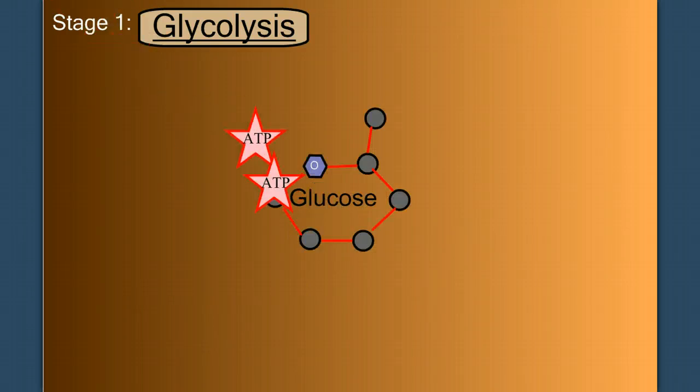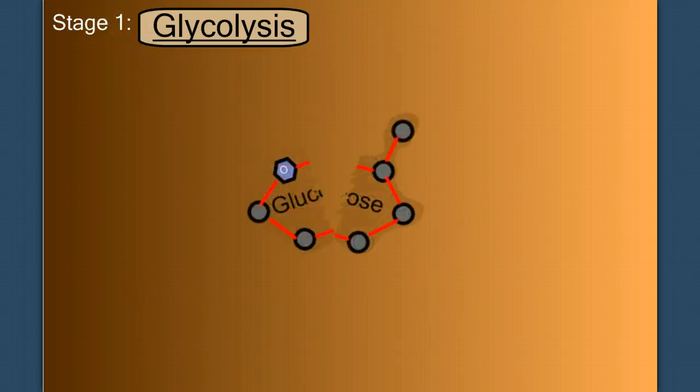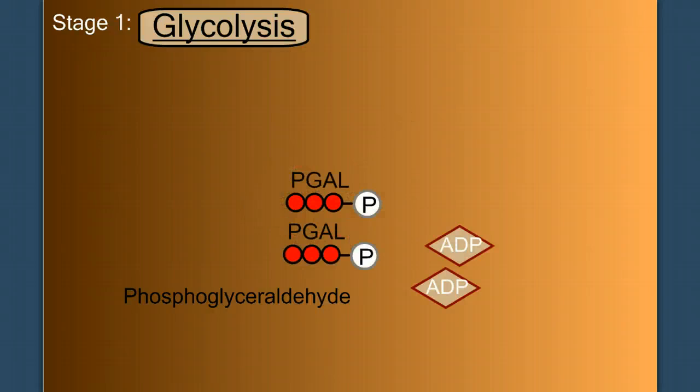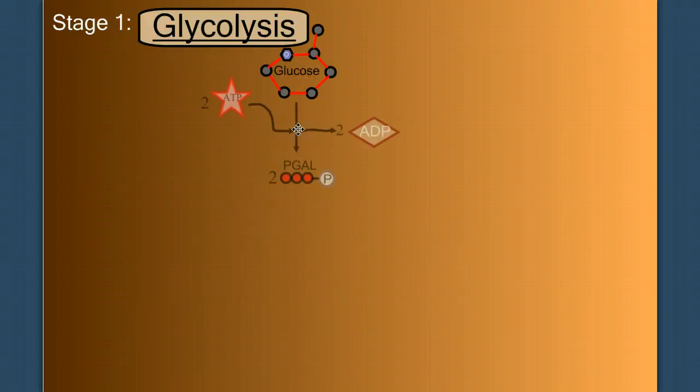So in our first step, we take a six-carbon molecule and split it into two three-carbon PGALs. And it's going to cost us two ATP. We call this our energy investment stage.